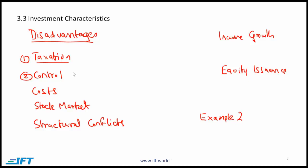The second disadvantage is that the control of the underlying assets or properties is low. Control happens through REIT management and as a shareholder, you really don't have much control over the underlying properties. Third, costs — the maintenance of a publicly traded REIT can be relatively high, so there is a question mark as to whether this high cost of running or managing the REIT justifies the benefits.